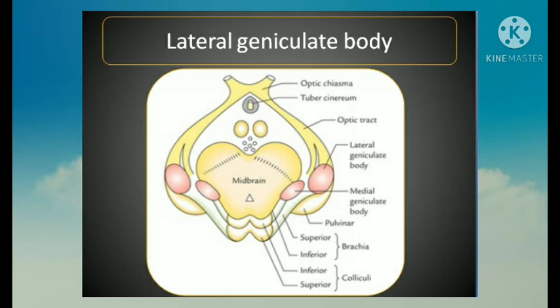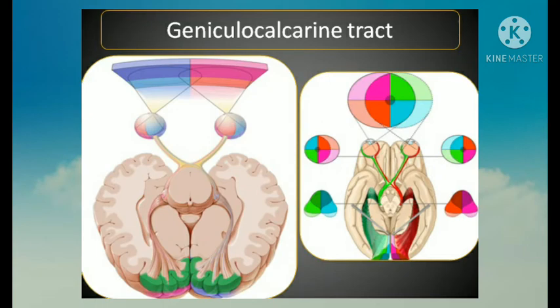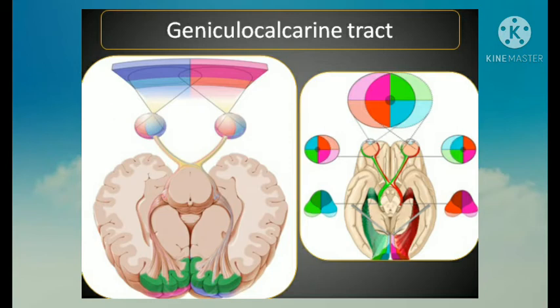The optic radiation, or geniculo-calcarine tract, is formed by fibers arising from cells of the lateral geniculate body. These fibers first pass through the retrolentiform part of the internal capsule, then fan out to form the optic radiation, which ends in the visual cortex in areas 17, 18, and 19 of the occipital lobe.